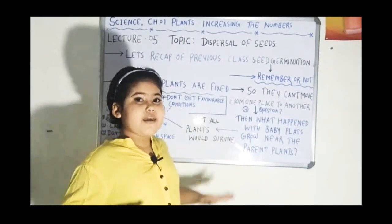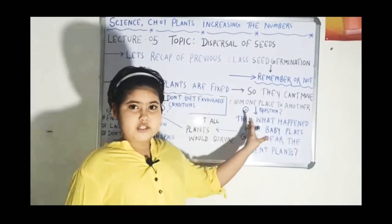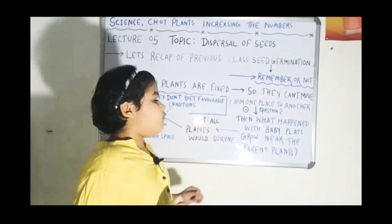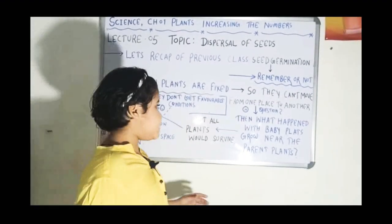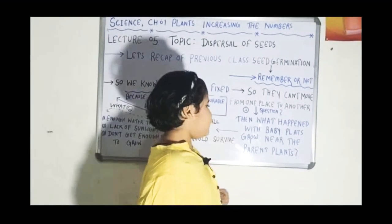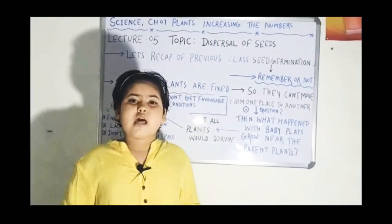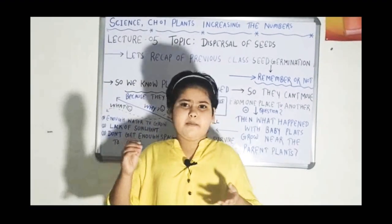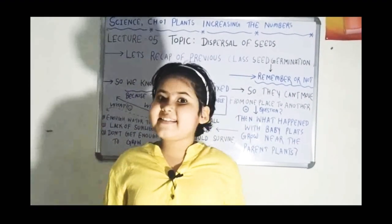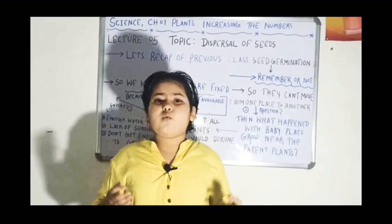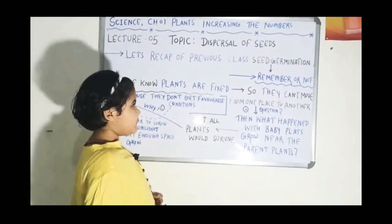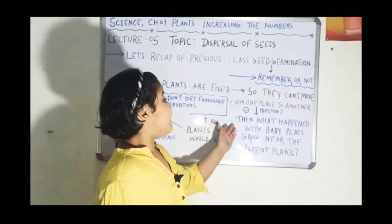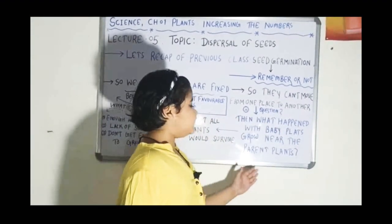Here is a question that can appear in our periodic test, so we must know it. The question is: what happens to baby plants grown near the parent plants? Baby plants are very tiny — they are seedlings. What happens to them?